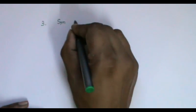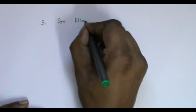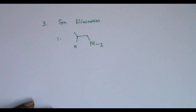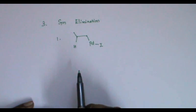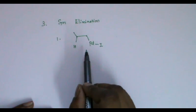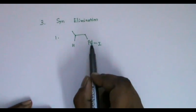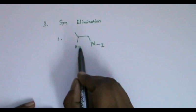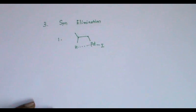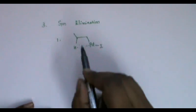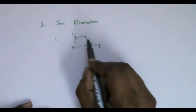The third category is syn elimination. The first reaction under this is elimination of organopalladium. In this intermediate, the palladium and hydrogen are cis to each other — only then will the elimination take place.